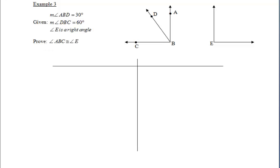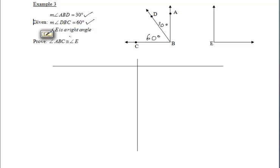Example 3 is a bit more detailed. We're given that angle ABD is 30 degrees and angle DBC is 60 degrees — I'll write both into the diagram. We're also told that angle E is a right angle, so I'll put the box there. In the end, we want to prove that angle ABC is congruent to angle E.